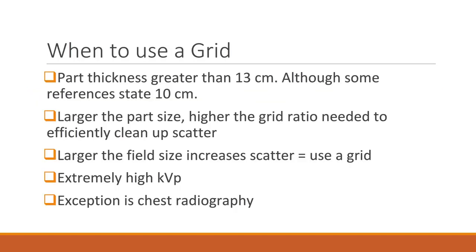Whether in the table Bucky, upright Bucky, or attached to an image receptor, grids should be utilized when part thickness is greater than 13 centimeters. However, some older references state part thicknesses greater than 10 centimeters require a grid. As the part thickness increases, the grid ratio utilized should also increase. Large field sizes, such as 14 by 17 inches, may require a grid even if the part is less than 13 centimeters, because larger field size means there is more tissue being exposed. It is more spread out rather than stacked, but causes scatter nonetheless, and a grid will need to be employed to clean up the scatter and restore the contrast of the resulting image.